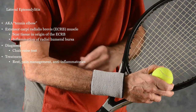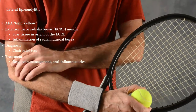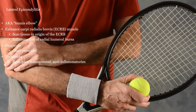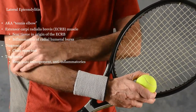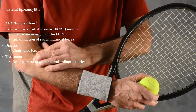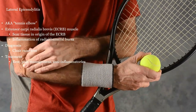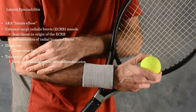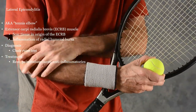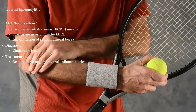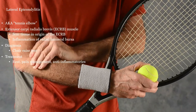Lateral epicondylitis is tennis elbow, another injury from repetitive motion. This is caused from the radial humeral bursa being inflamed and only needs rest and abstaining from tennis for a while.